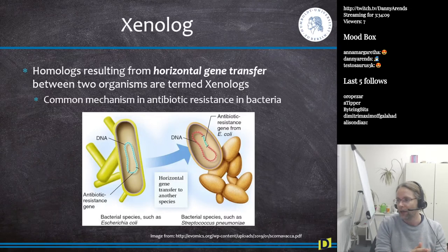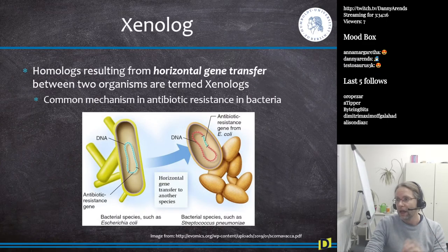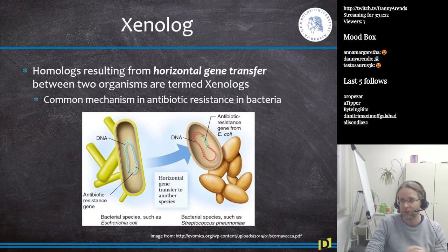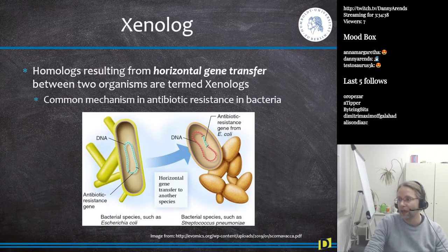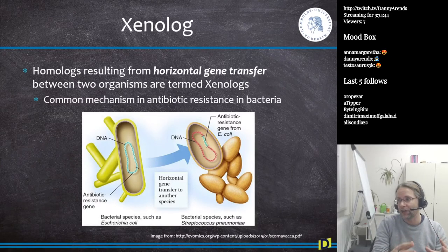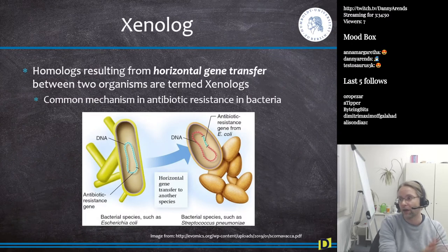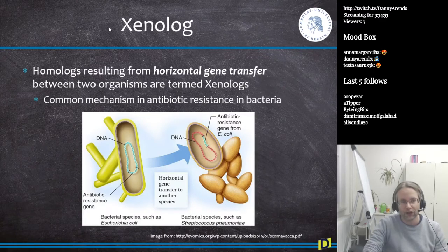There appears to be a common ancestor between Streptococcus and E. coli but there actually isn't — it's just a xenolog, a transfer of DNA from one species to another. This happens more often than you think, not just in bacteria but also in multicellular species. DNA is exchanged quite frequently, making species look more similar, so you might infer a common ancestor one million years ago when the real common ancestor is hundreds of millions of years ago.